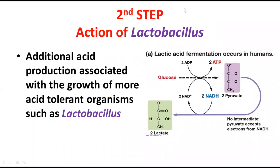In the second step, it is similar to the first, but a different bacterium is involved. Due to the accumulation of very high levels of lactic acid, the medium becomes acidic. Another type of lactic acid bacterium, Lactobacillus, starts its action because it functions well in an acidic medium. It also converts lactose into glucose, and that glucose is converted into lactate, causing a further gradual increase in lactic acid.